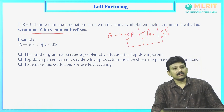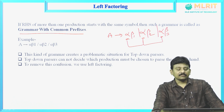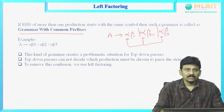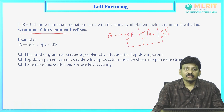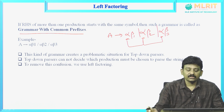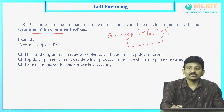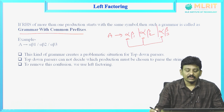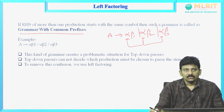This kind of grammar creates a problem for top-down parsers, because top-down parsers get confused about which rule to choose for parsing the input — whether to choose alpha-beta1, alpha-beta2, or alpha-beta3 for the given input string. So we need to eliminate this confusion, and to do that we use the technique called left factoring.